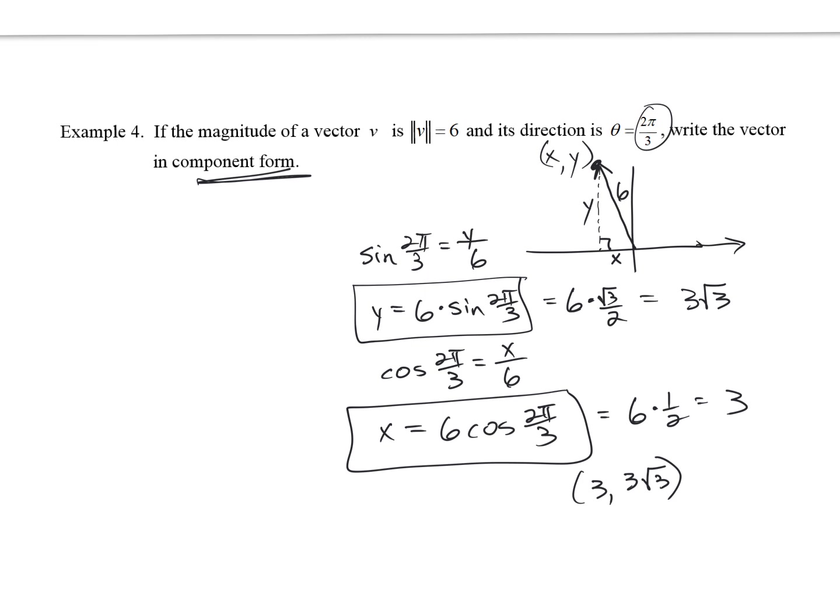Wait, I need a negative there — isn't the cosine of 2π/3 negative 1/2? Yes. If I'm in the second quadrant, my x coordinate should be negative. So the cosine of 2π/3 was negative 1/2, giving x = −3. Use common sense when you're doing it too.